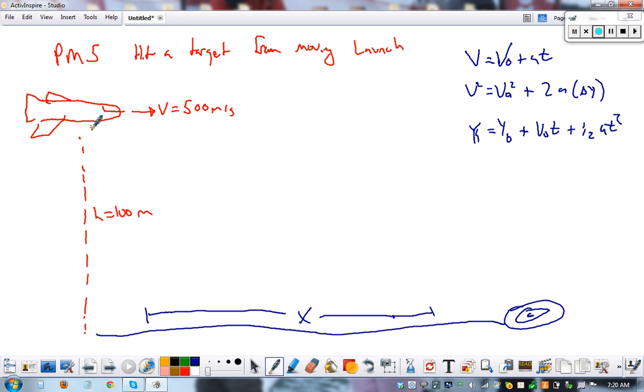So if a plane is flying at 500 meters per second forward and it's a hundred meters up, how far away should it let go of the bombs? Because the bombs aren't just going to fall straight down. They're going to fall at an angle because of the forward velocity they already have.